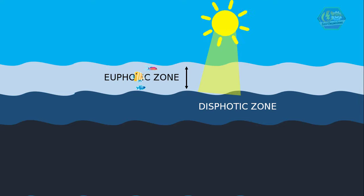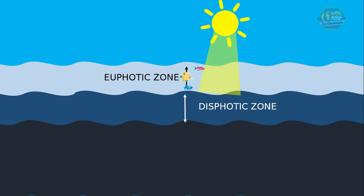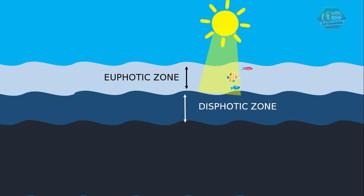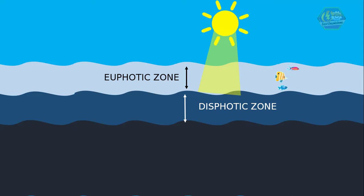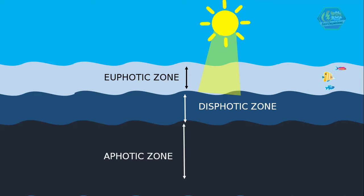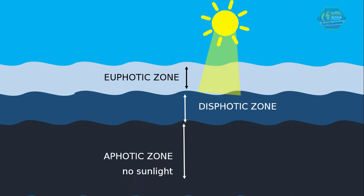Second is the dysphotic, or the twilight zone. This zone gets some sunlight but not enough for plants to survive. The third zone is the aphotic zone, where there is no sunlight at all — the darkest side of the ocean, where unknown creatures could be lurking.